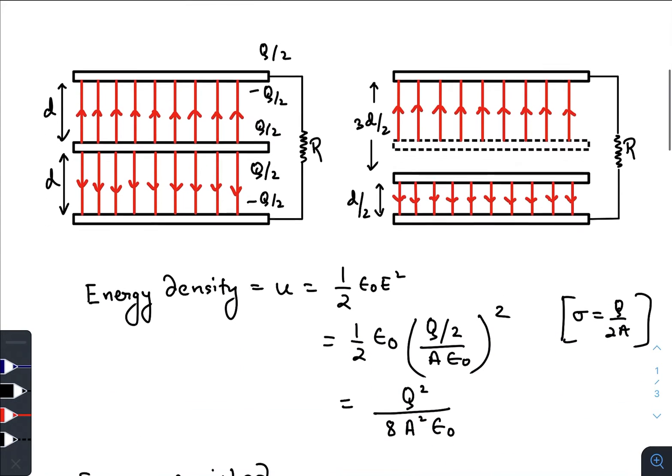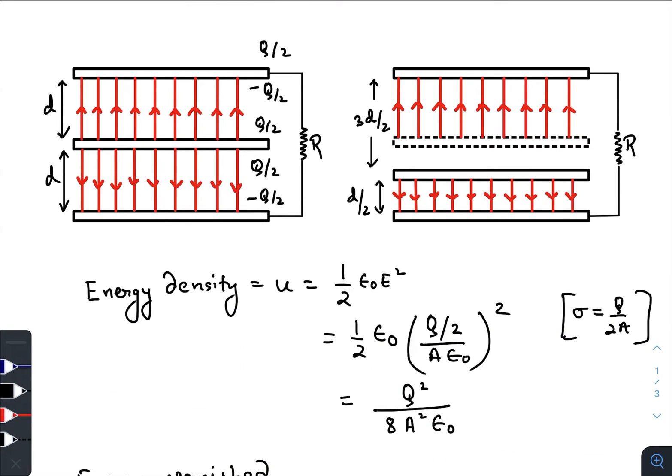I have drawn a clear diagram for easy understanding. Initially, before shifting this middle slab, the charges were distributed on all the six surfaces in this manner. The electric field in the free space or between the plates was something like this. Same amount of electric field were in both regions.